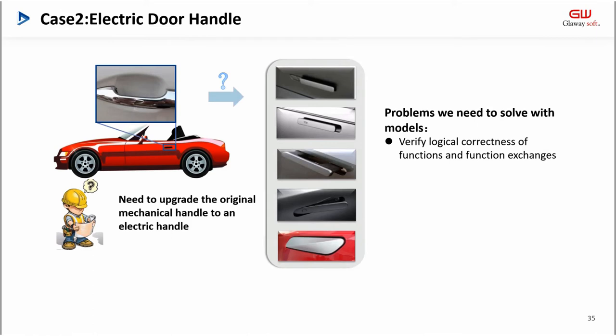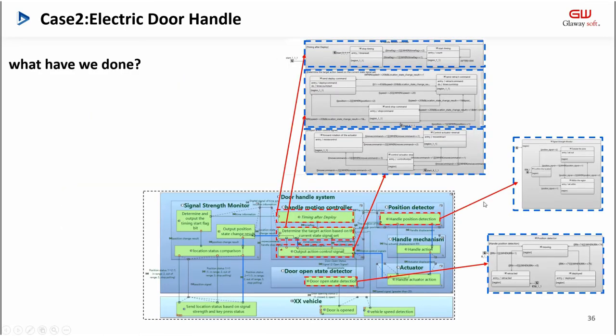In the second case, the user needs to upgrade the mechanical handle to an electronic handle. Because new controllers or new control logic need to be added, the user needs to verify the correctness of functions and signals before writing a detailed implementation spec. If the implementation spec is not logically feasible, the supplier will waste a lot of time in the modification and testing.